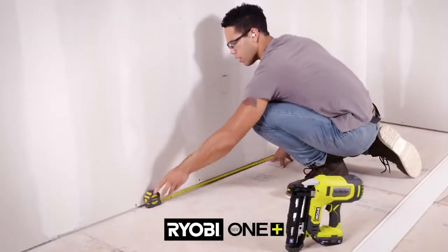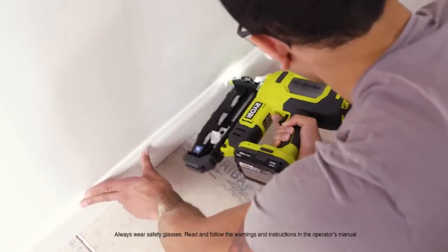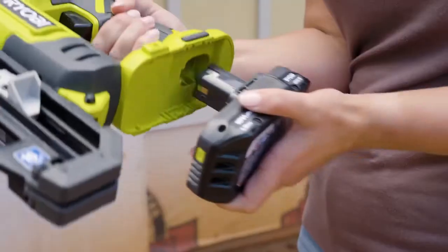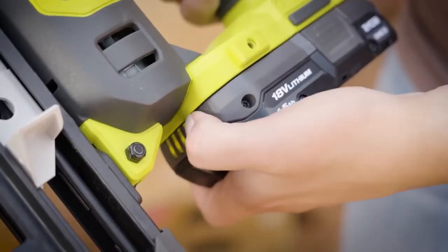The Ryobi One Plus Airstrike 16-gauge straight finish nailer. Helping you finish the job with the cordless convenience of One Plus technology.